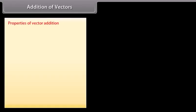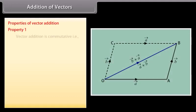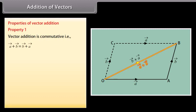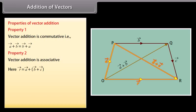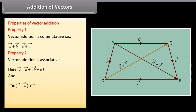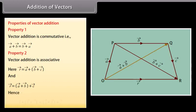Parallelogram law of vectors: if two vectors are represented in magnitude and direction by two adjacent sides of a parallelogram, then their sum is represented in magnitude and direction by the diagonal of the parallelogram which is co-initial with the given vectors. Properties of vector addition: Property 1 — vector addition is commutative, that is, vector A + vector B = vector B + vector A. Property 2 — vector addition is associative, that is, vector A + (vector B + vector C) = (vector A + vector B) + vector C.